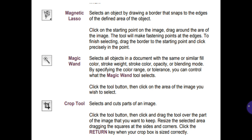Crop Tool: selects and cuts parts of an image. Click the tool button, then click and drag the tool over the part of the image that you want to keep. Resize the selected area by dragging the squares at the sides and corners. Click the Return key when your crop box is sized correctly.